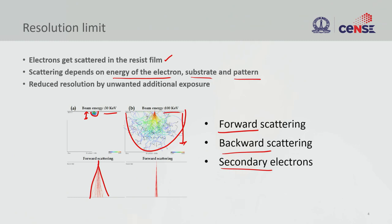At low energy, forward scattering diverges quickly. At high energy, the forward beam is very sharp. However, we should not conclude that high-energy beams are much sharper and can define very fine features. The exposure of electron beam resist primarily depends on back scattering and secondary scattering, not just forward scattering — and all these secondary and back-scattered electrons contribute to unwanted exposure.